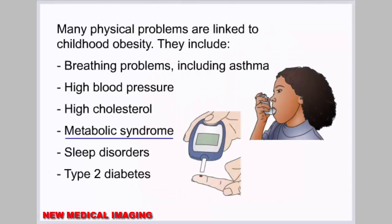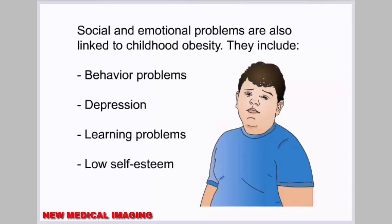Many physical problems are linked to childhood obesity, including breathing problems such as asthma, high blood pressure, high cholesterol, metabolic syndrome, sleep disorders, and type 2 diabetes. Social and emotional problems are also linked to childhood obesity, including behavior problems, depression, learning problems, and low self-esteem.